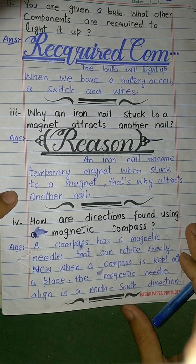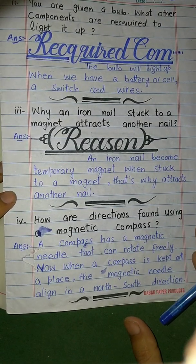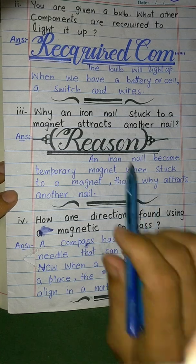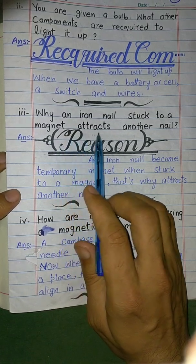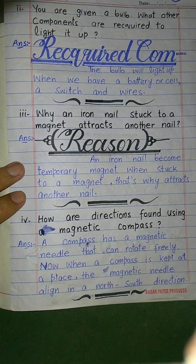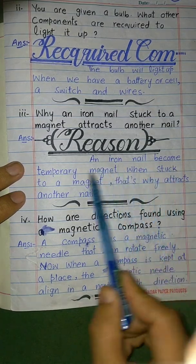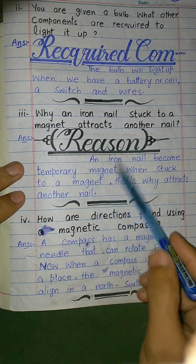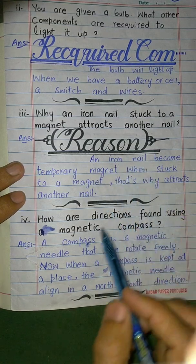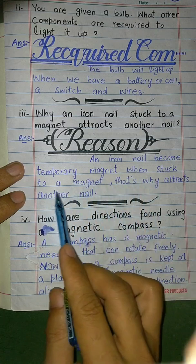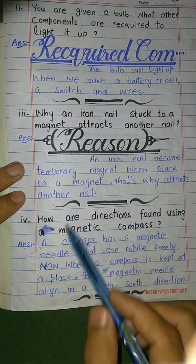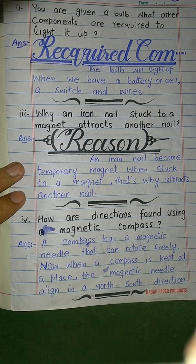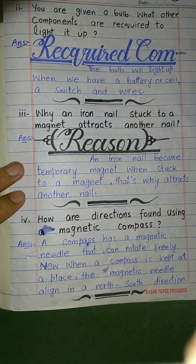Why does an iron nail stuck to a magnet attract another nail? When an iron nail is stuck to a magnet, it becomes a temporary magnet itself. Because it becomes magnetized, it can attract another nail or needle. This is how a magnet induces magnetism in iron objects.